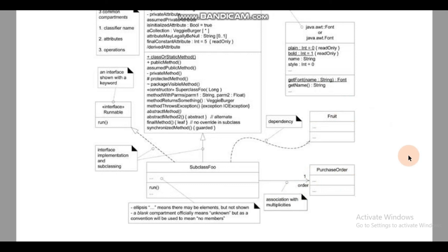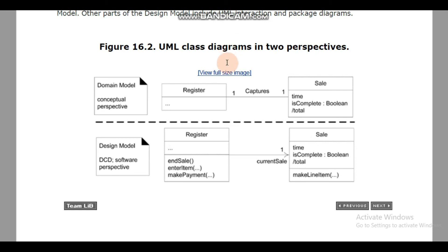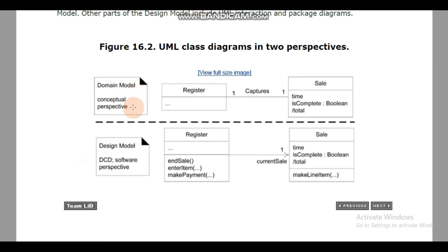UML class diagrams can be viewed in two perspectives. The class diagram and domain model are not the same because the domain model has no methods or operations, while a class diagram does. When we draw a domain model using UML notation we call it the conceptual perspective — it has classifier name, attributes, relationships, and multiplicity but no operations. The design class diagram is the software perspective and includes class name, attributes, and operations.